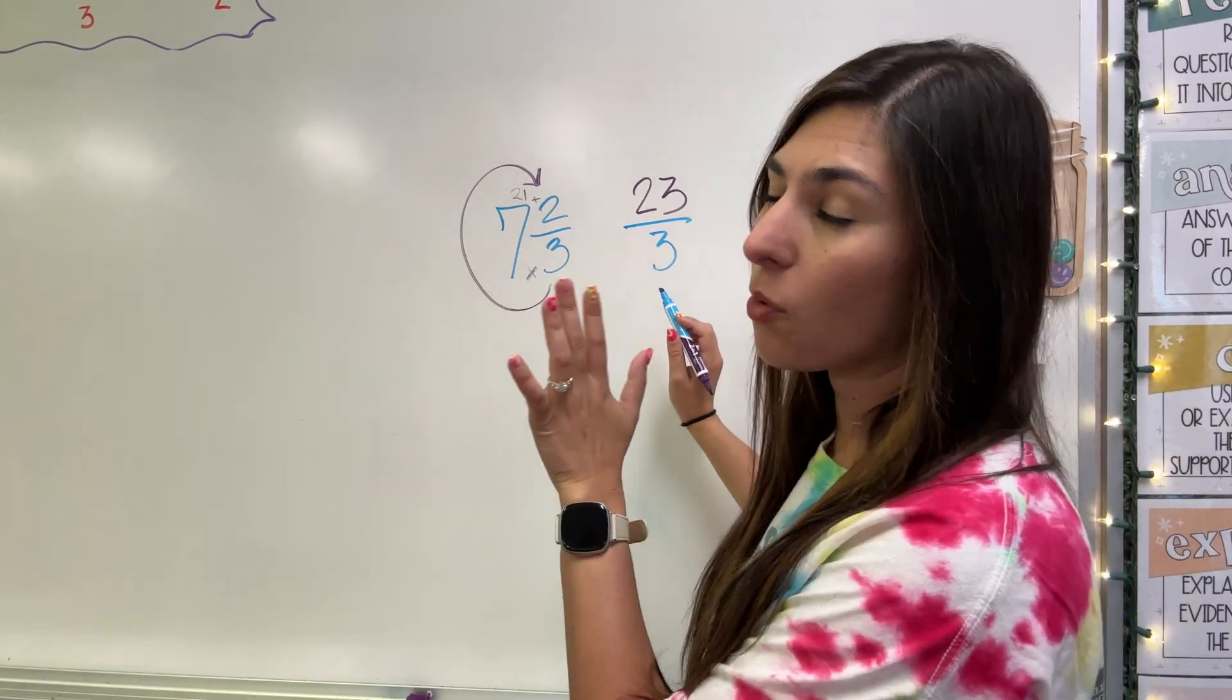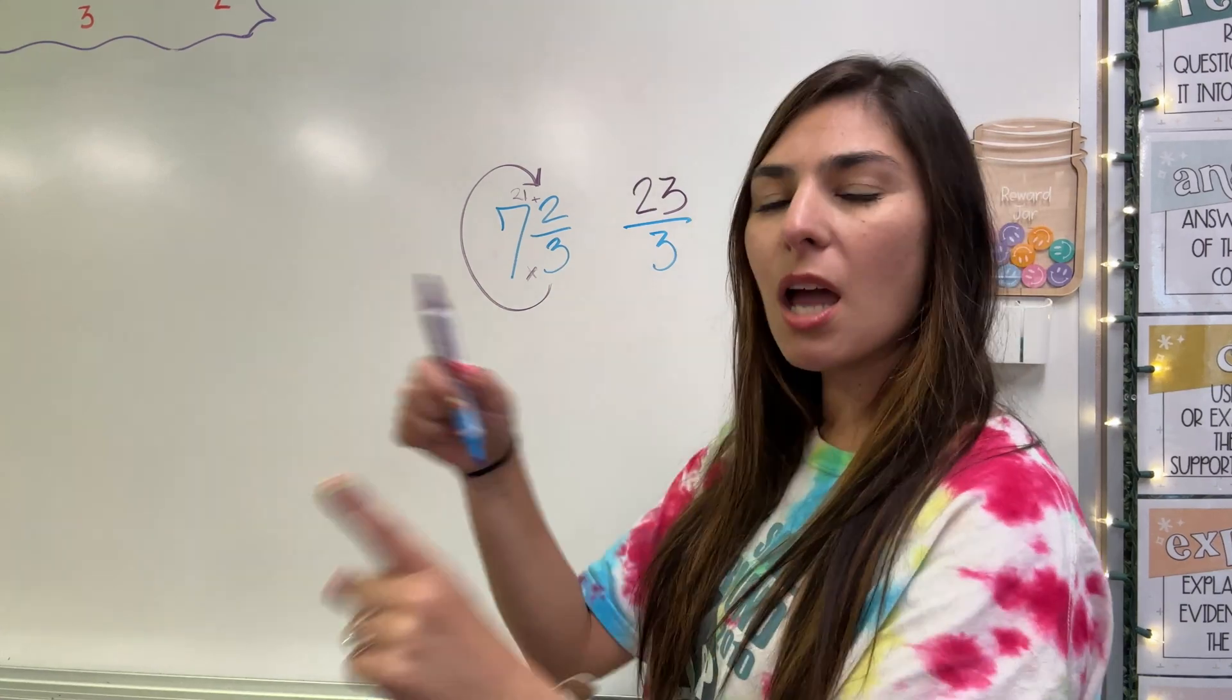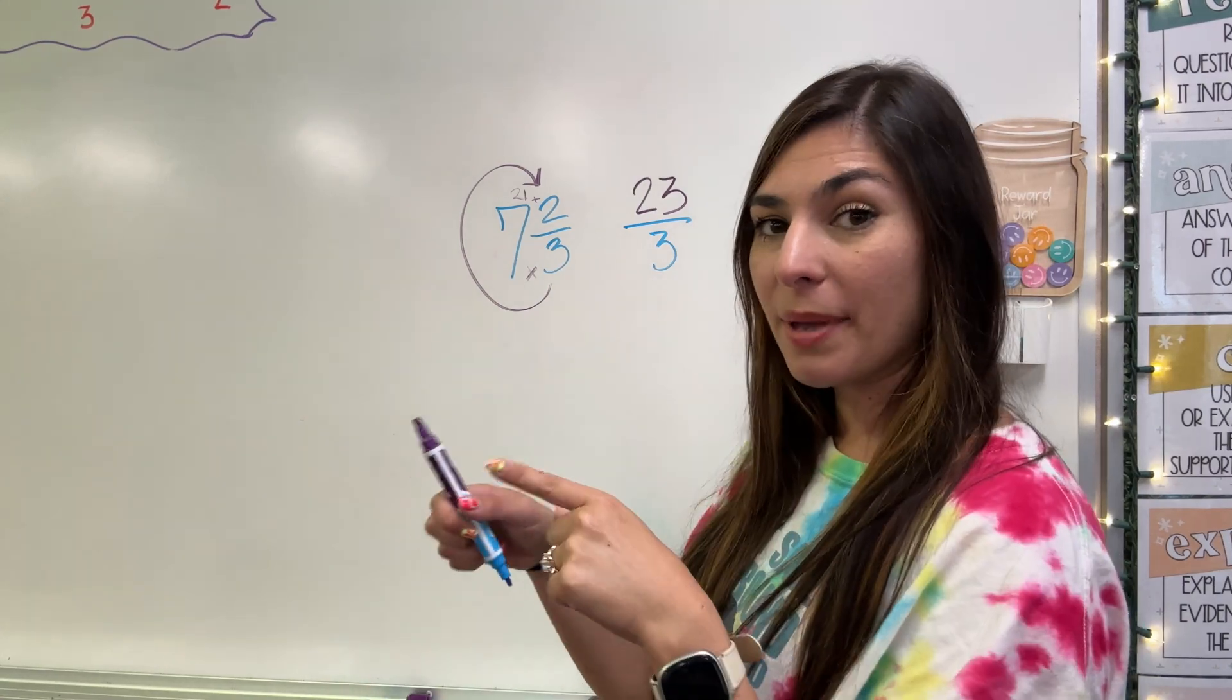This is my improper fraction. Now we're ready to multiply this with another fraction or divide this with another fraction. Let's go the other way from an improper fraction to a mixed number.